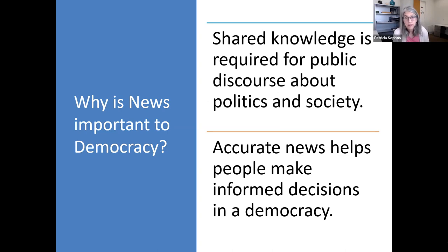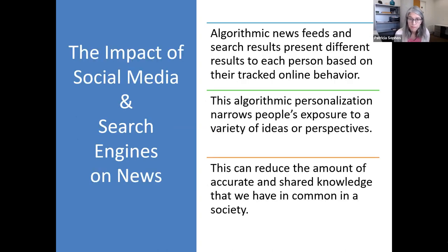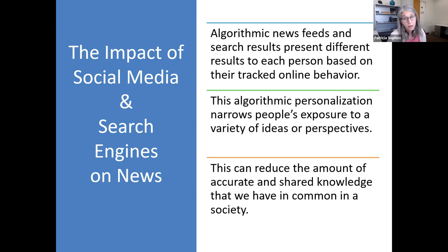Why is news important in a democracy? Shared knowledge is required for public discourse about politics and society, and accurate news helps people make informed decisions. Social media and search engines have changed our access to shared knowledge — algorithmic news feeds present different results to each person based on tracked online behavior. This algorithmic personalization narrows exposure to diverse ideas, and disinformation erodes trust in media.